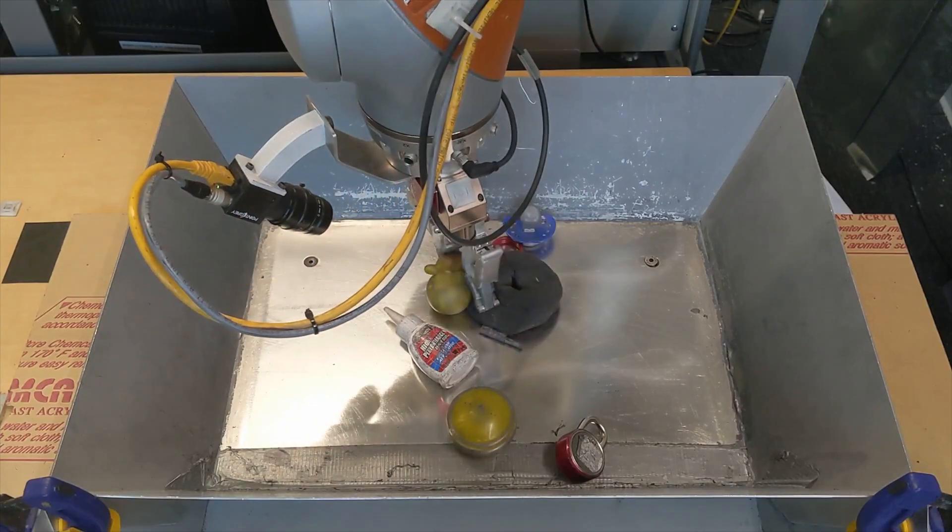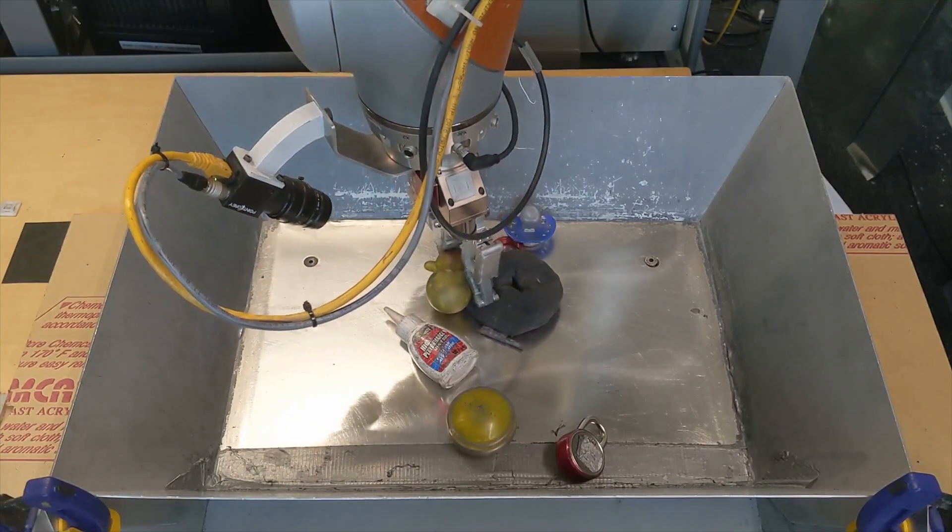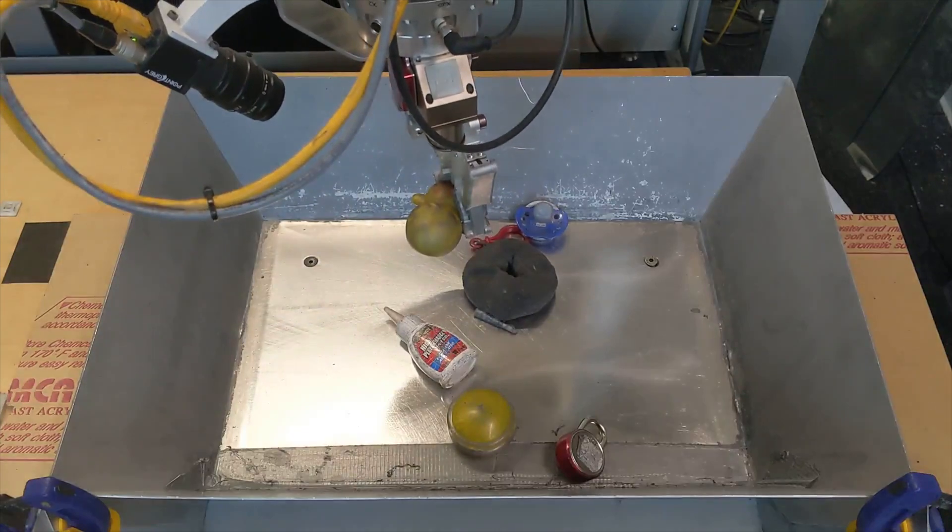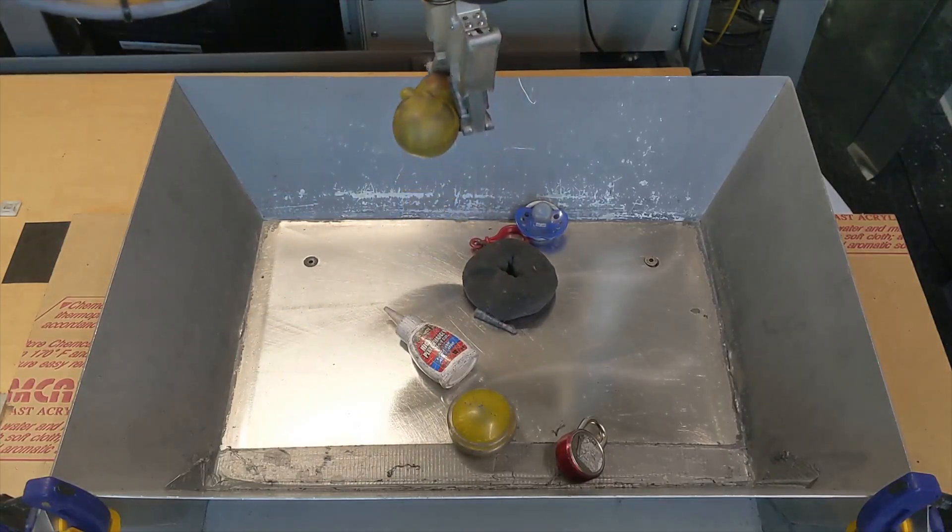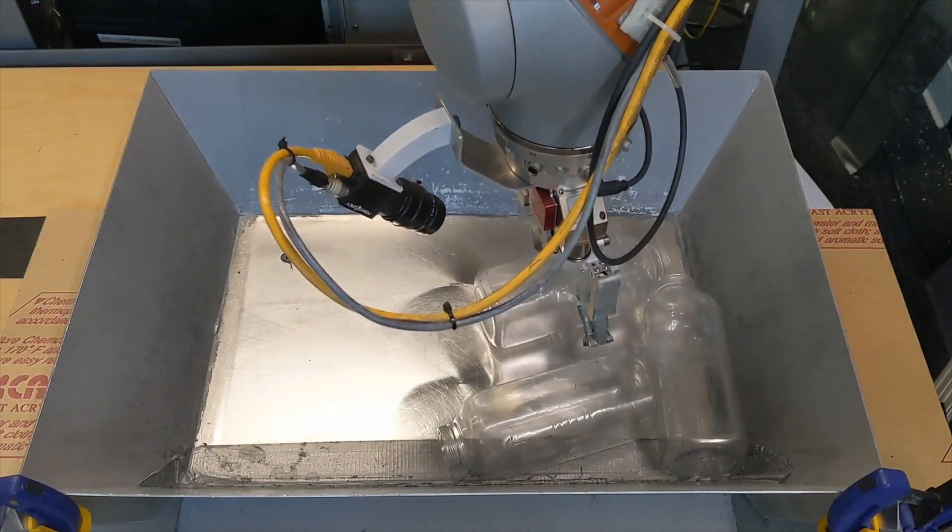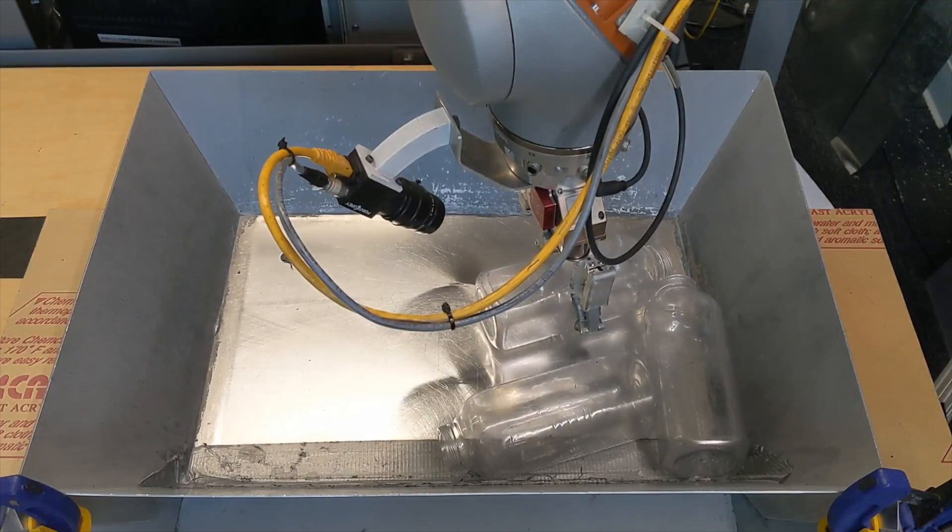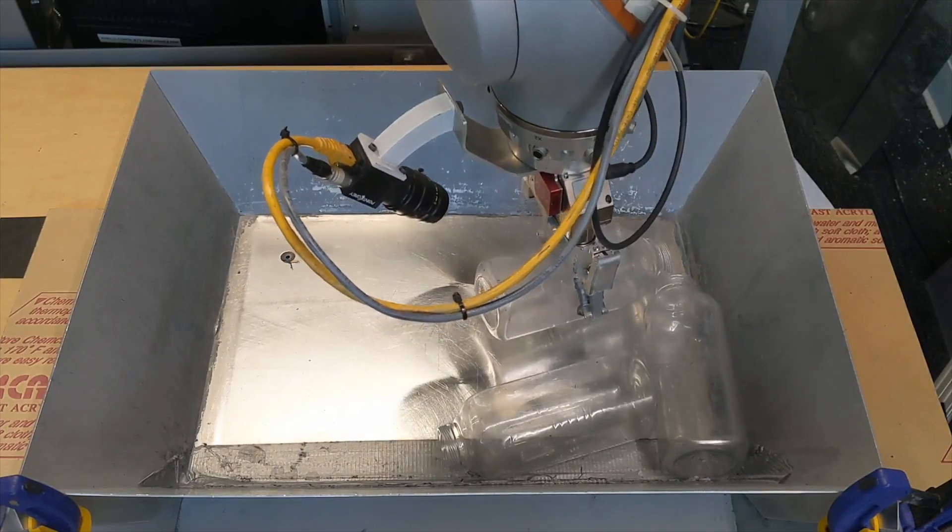Reinforcement learning can be used to learn highly capable policies that generalize to a broad range of objects. But these policies can often fail when tested in new settings that lie outside of the distribution of scenes they were trained in, such as these transparent bottles, which were not seen during training.